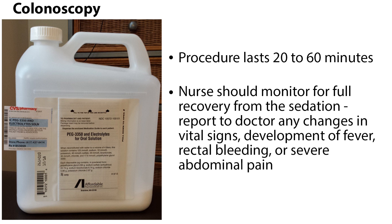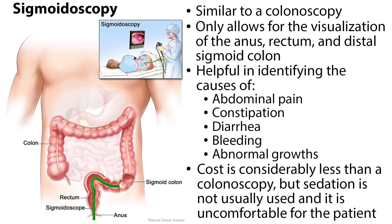The nurse should monitor the patient for full recovery from sedation. Any changes in vital signs or the development of fever, rectal bleeding, or severe abdominal pain should be reported to the physician immediately. A sigmoidoscopy is similar to a colonoscopy, but it only allows for visualization of the anus, rectum, and distal sigmoid colon. It is helpful in identifying the causes of abdominal pain, constipation, diarrhea, bleeding, and abnormal growths. The cost is considerably less than a colonoscopy, but sedation is not usually used, making it uncomfortable for the patient. Most doctors recommend a colonoscopy as the best test for colon cancer screening, done every 10 years starting at age 50.